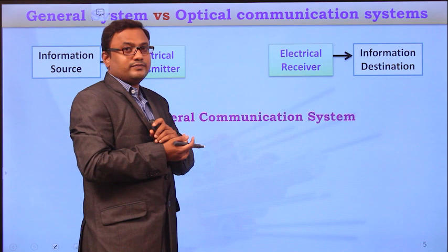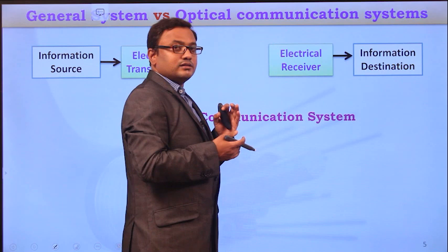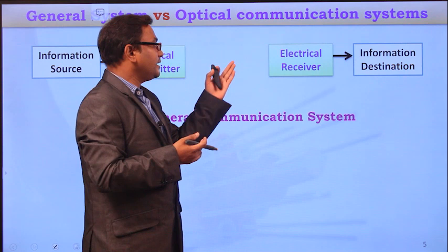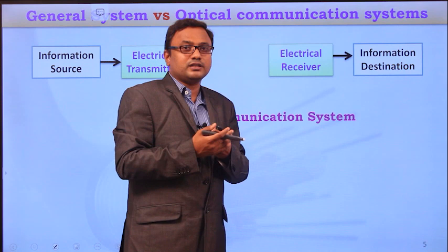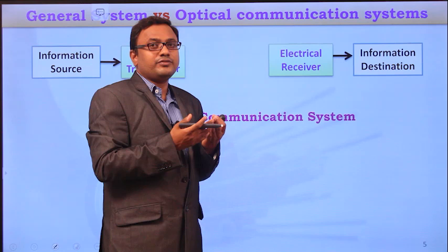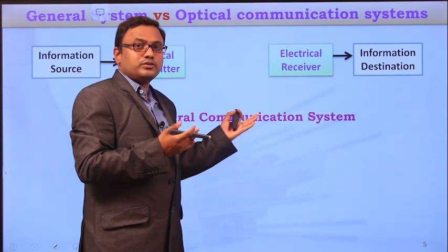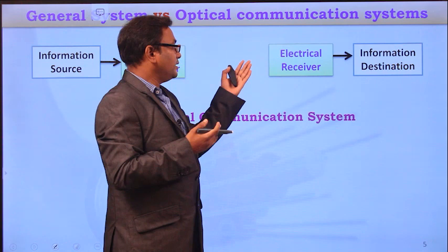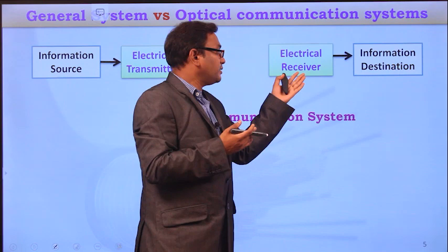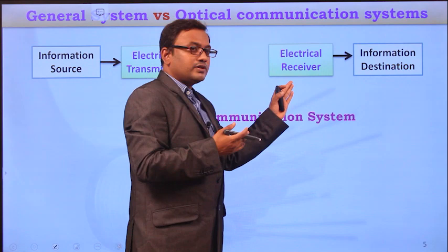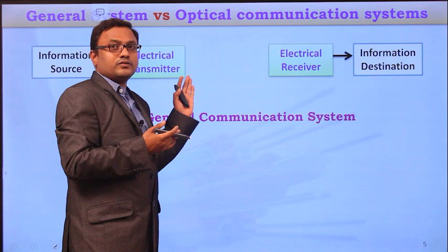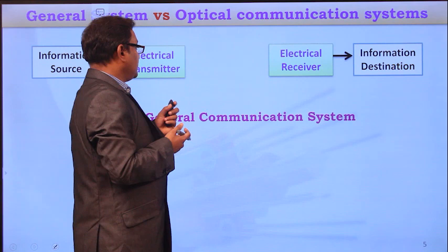At the receiver side, the receiver receives the electrical information. That electrical information is generally in the form of zeros and ones, and we can't interpret that information directly in electrical form. So we have to decode and process that information, and we have to convert the processed electrical signal back into physical information. The electrical receiver converts the electrical signal into the physical signal, whereas the electrical transmitter converts the physical information into the electrical signal.